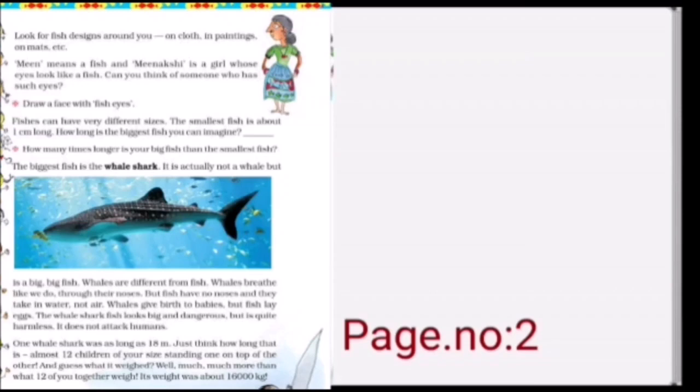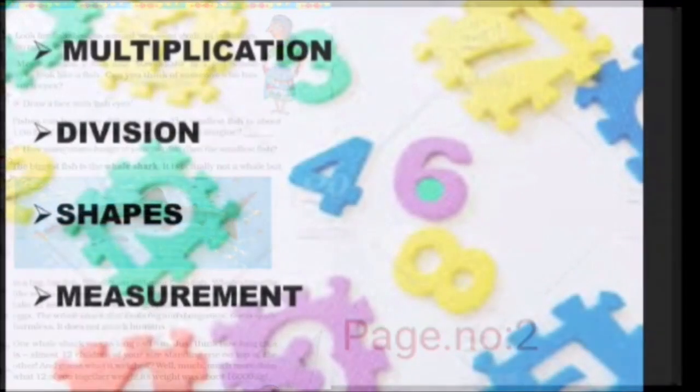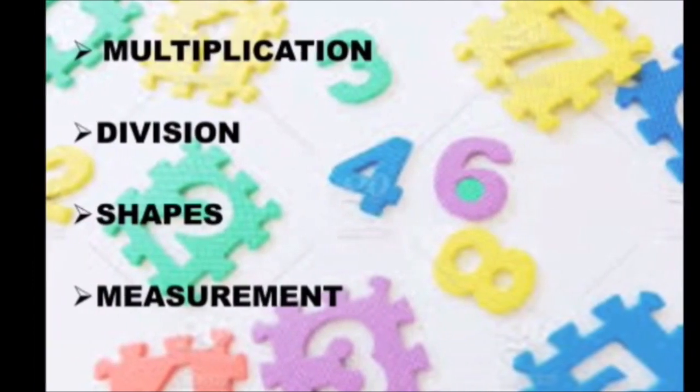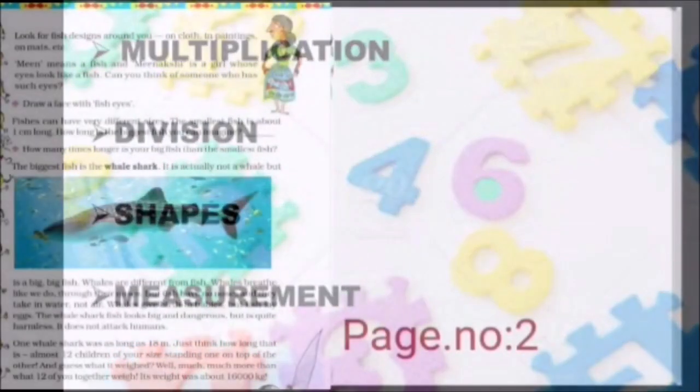Just try to draw a face with fish eyes. Fishes can have very different sizes. The small fish is about one centimeter long. How long is the biggest fish? Can you imagine? So in this chapter we are going to see, in mathematical terms, multiplication, division, shapes and measurements.